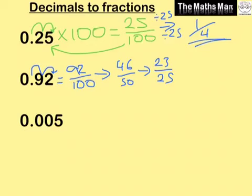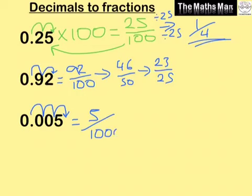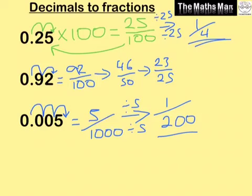For 0.005, multiplying by 100 only gives us 0.5, which isn't a whole number yet. So we need to multiply by 1000 instead — the decimal point moves three times — giving us 5 over 1000. Dividing top and bottom by 5: 5 divided by 5 is 1, and 1000 divided by 5 is 200, so our final answer is 1 over 200.